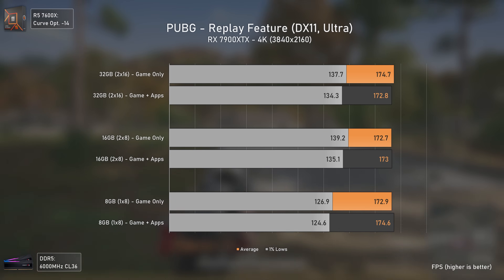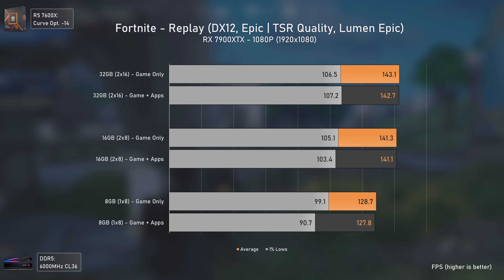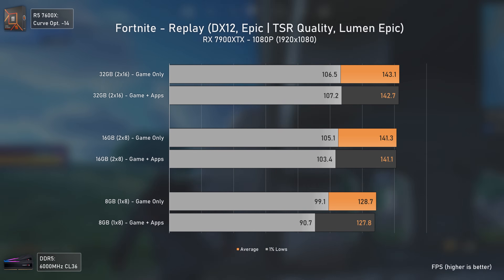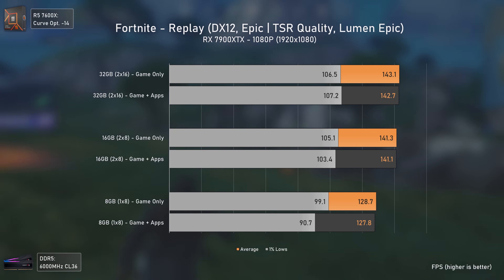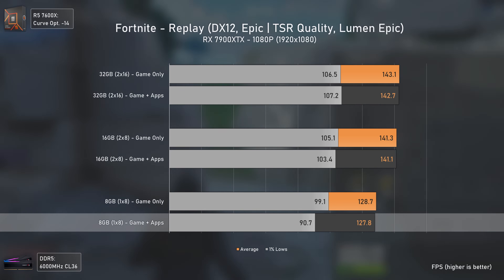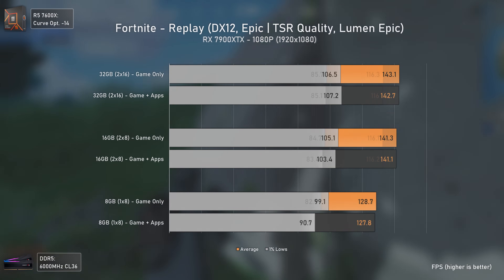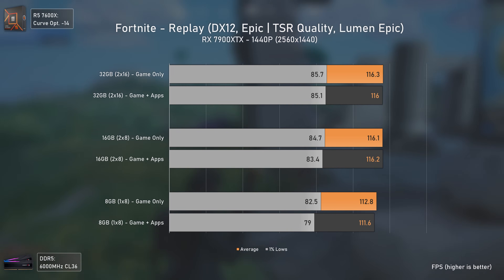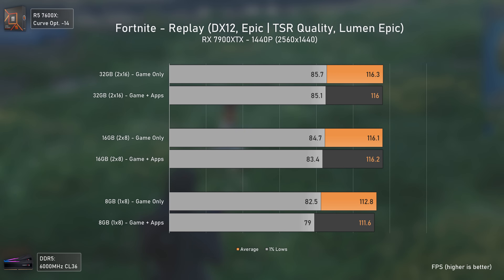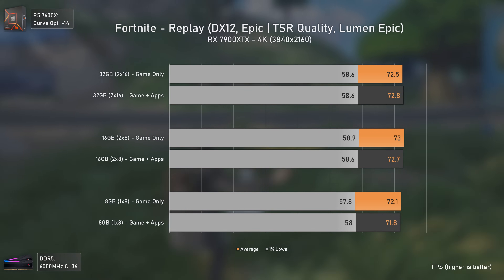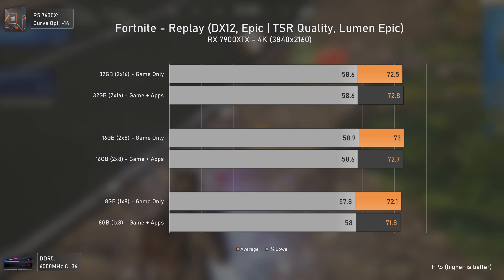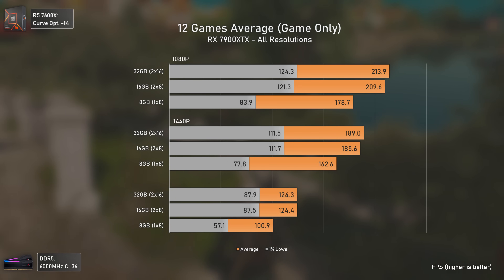Fortnite was tested using Unreal Engine 5 with Epic settings, Nanite geometry, Lumen set to Epic, and TSR upscaling in quality mode. At 1080p, the 8GB stick delivers around 10% less FPS with 1% lows dropping with apps, while others hold steady. At 1440p, 16 and 32GB kits deliver the same performance and the 8GB stick gets close with slightly lower values. At 4K, pushing just over 70 FPS, RAM capacity doesn't seem to be an issue even in 2024.